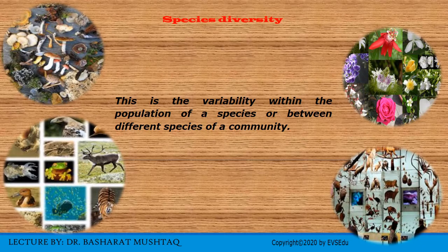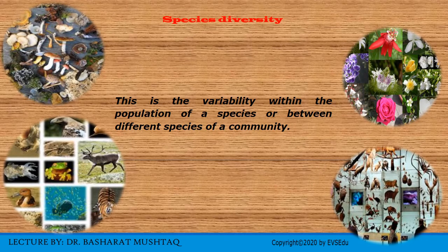The next level of biodiversity is species diversity. This is the variability within the population of a species or between different species, as depicted in these pictures. It includes the full range of species from microorganisms to giant mammoth varieties of plants and animals — for example, single-celled viruses and bacteria, as well as multicellular plants, animals, and fungi.